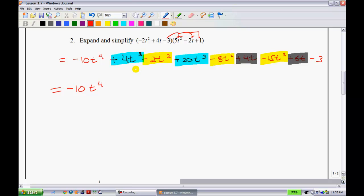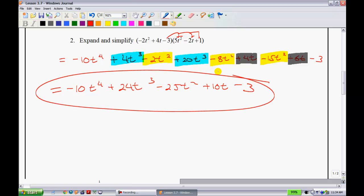So gathering my like terms correctly here now I have my t cubes I'll deal with next. That gives me plus 24t cubes. My t squareds. I have negative 2, negative 8, negative 15. That's negative 25t squared. And now my gray guys here. I have 4t and a positive 6t. That gives me plus 10t. And lastly I have my negative 3. Alright. So that would be your final solution. I'm not going to do a check for this one. You can mosey on over to the next page.